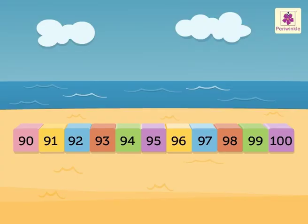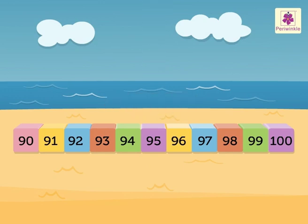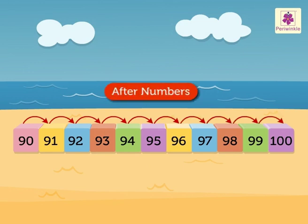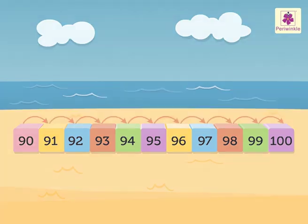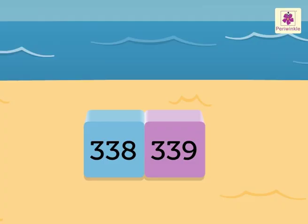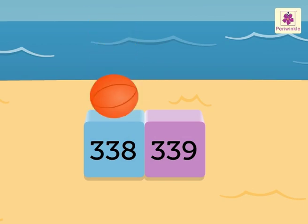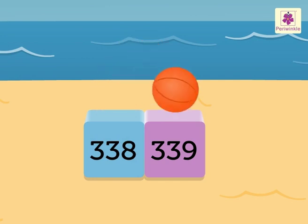Now let us revise after numbers. When we count forward from a given number, we get the numbers after. Hey, where is the ball? It is on number 338. Which number comes after 338? 339!